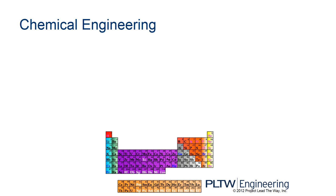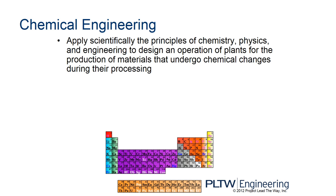Let's look first at chemical engineering — many times shortened to chem E. A chemical engineer applies the principles of chemistry, physics, and engineering to design and operate plants for the production of materials that undergo chemical changes during processing. More than half of the time, they're not directly involved with the initial creation of the chemical, but they are involved in scaling it up and making production efficient and safe.